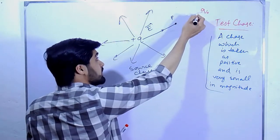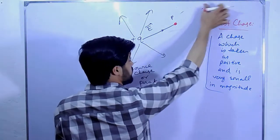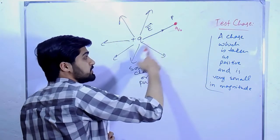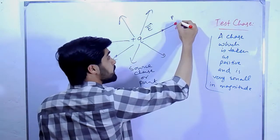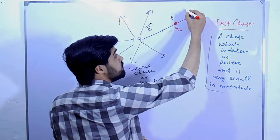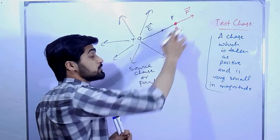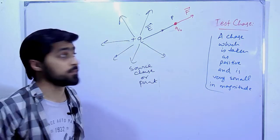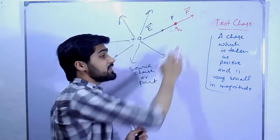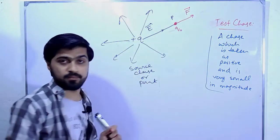This unit positive test charge, when brought into the field of the positive source charge, will experience a force — repulsion, since both are positive. So the test charge will move outward. The force applied on the test charge by the source charge is the electric field intensity. If the source charge were negative, the test charge would be attracted inward.